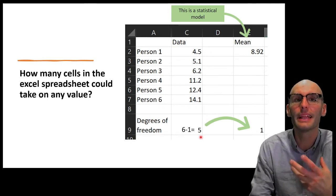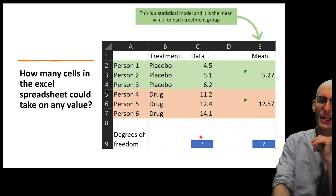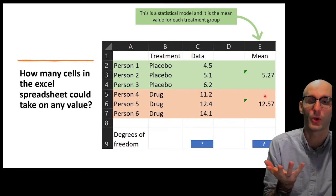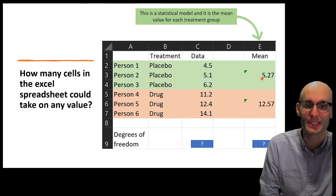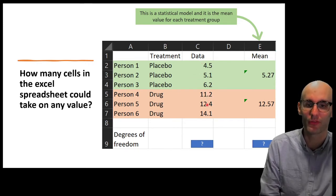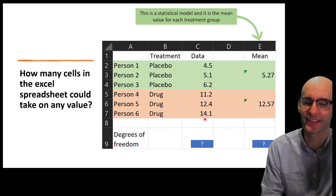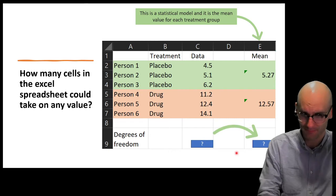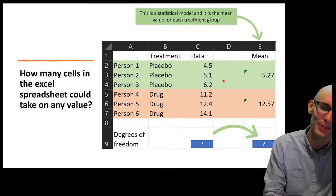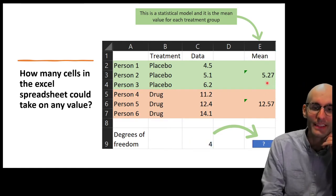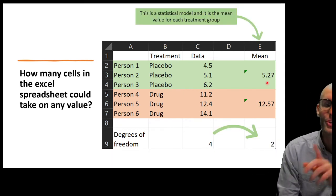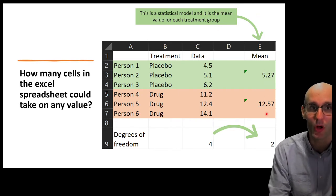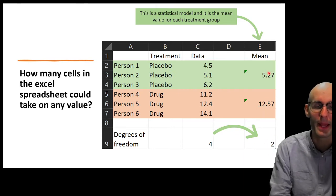The data loses its ability to vary as you increase the complexity of the model. Now we're going to run a different model with the same data, but now we've got a new column — treatment — with placebo and drug. Instead of a mean of the whole group, we're running a mean of each separate group: the mean of the green squares and the mean of the orange squares. With this slightly more complicated model — just two means instead of one — there are now only four degrees of freedom in the data, because there are two degrees of freedom in the statistical model.